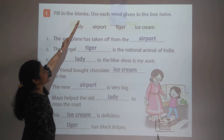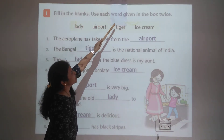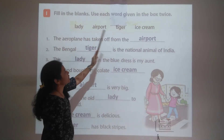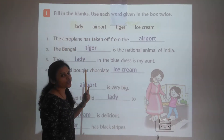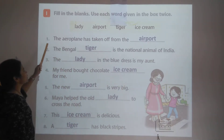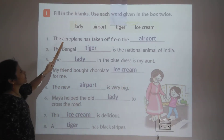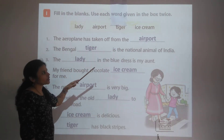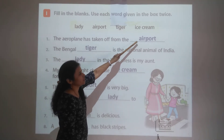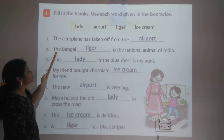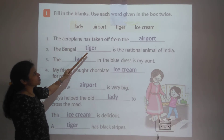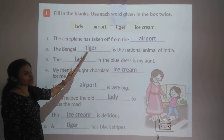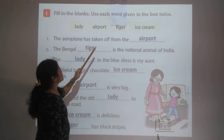Question I: Fill in the blanks. Use each word from the box twice. First blank: The aeroplane has taken off from the airport. Second blank: The Bengal tiger is the national animal of India.